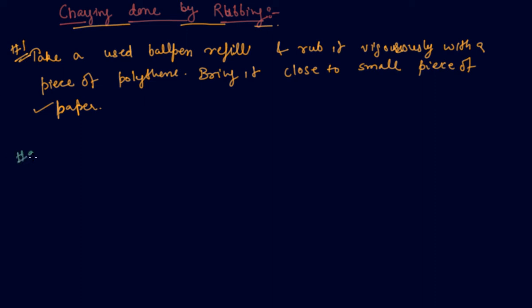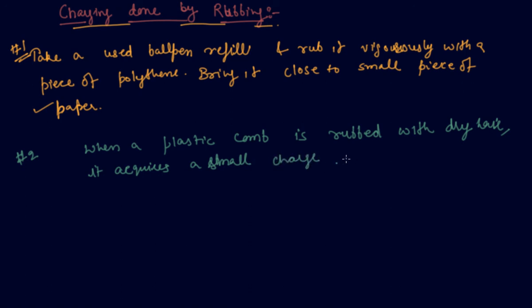Example number two: when a plastic comb is rubbed with dry hair, it acquires a small charge. These objects are called charged objects.